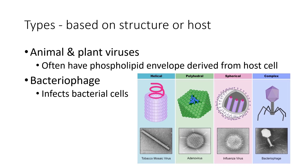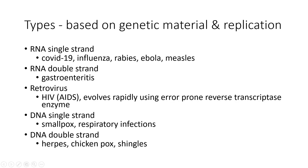Instead we tend to classify viruses based on their structure or their host. Animal and plant viruses often have a phospholipid envelope which they derive when they emerge from the host cell. Sometimes we refer to viruses as bacteriophages if they infect bacteria cells. Another way to classify them is by their genetic material. Here are some examples.